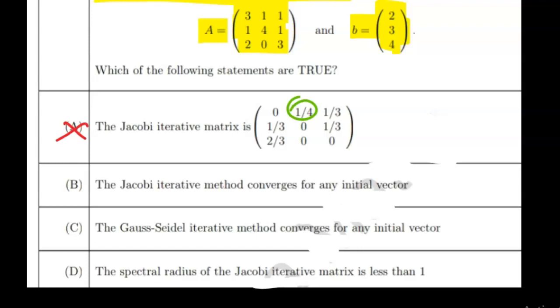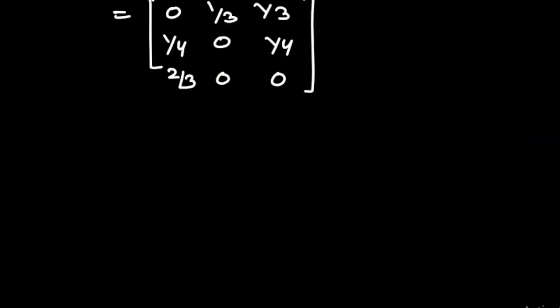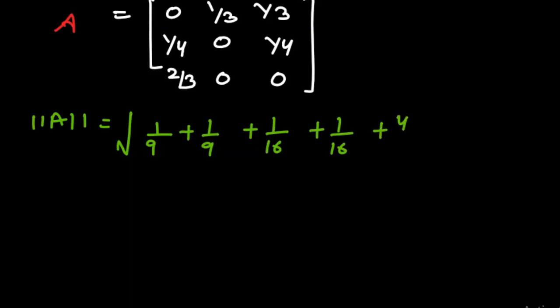For option B, we have to check convergence for any initial vector. To show this matrix converges, we need to compute the norm. We square all the row elements: 0 squared, 1/3 squared gives 1/9, another 1/9. Next row: 1/16 plus 1/16.